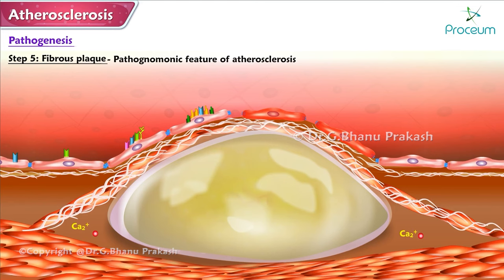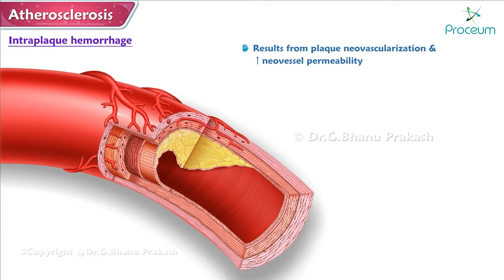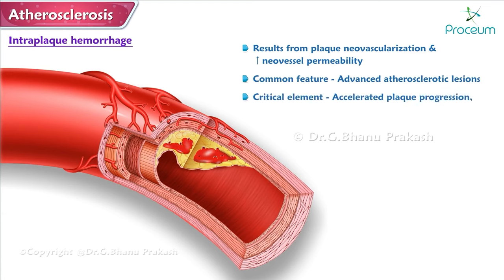Fibrous plaque is a pathognomonic feature of atherosclerosis, composed of a fibrous cap and a necrotic core. Intraplaque hemorrhage mainly results from plaque neovascularization and increased neovessel permeability. It is a common feature of advanced atherosclerotic lesions and a critical element leading to accelerated plaque progression, plaque instability, and ischemic vascular events.